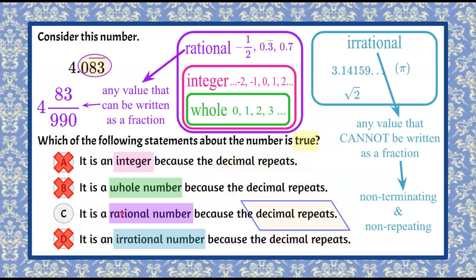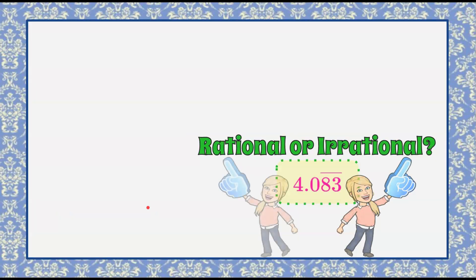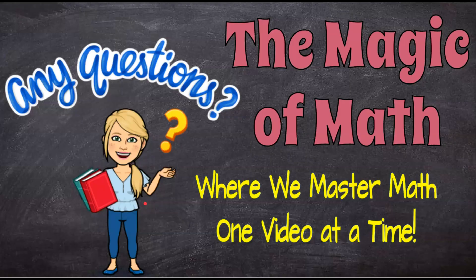So there we have it, our answer choice here because the decimal repeats. It is a rational number. So I thank you for joining me today to talk about rational and irrational numbers, and I hope you'll come back soon to the magic of math, where we continue to master math one video at a time. Have a great day.